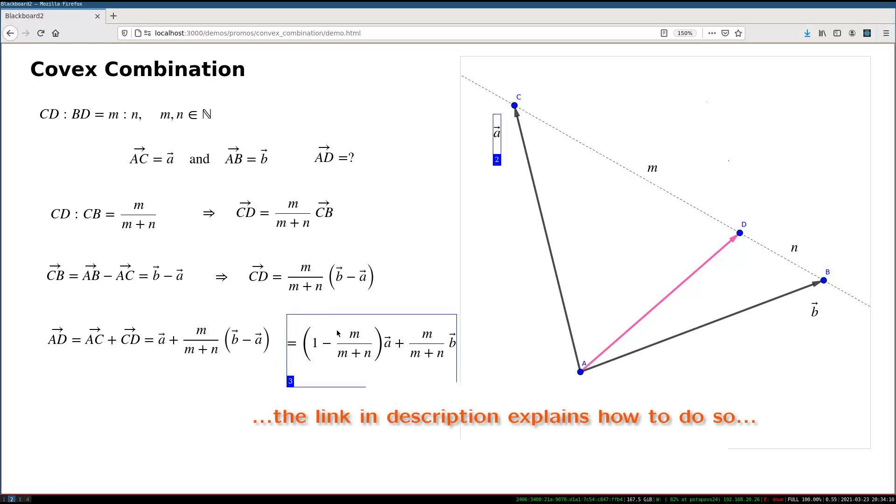This expression can be simplified slightly if we introduce, often we use the Greek letters for that, if we introduce the lambda, in place of this fraction. We can spot that this lambda is between 0 and 1. I put here less or equal and less or equal,